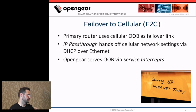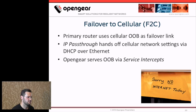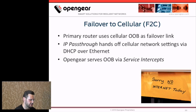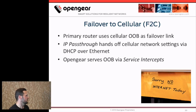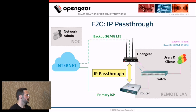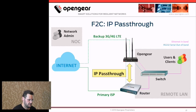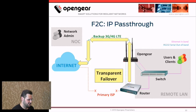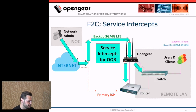The failover logic is all downstream in the router, including quality of service — we expect that to be handled by the device most specialized for it, which is the router downstream. We're not just doing IP pass-through. We also have this concept of service intercepts, so we can continue to allow our smart out-of-band feature set to be available even in a failover situation — continuing to serve our management access while the failover is occurring.